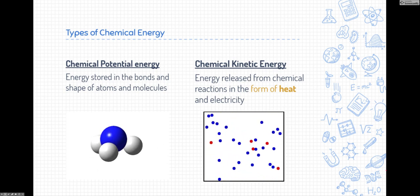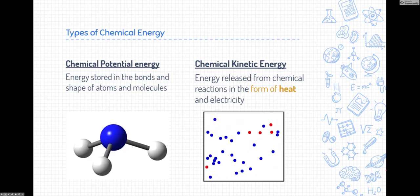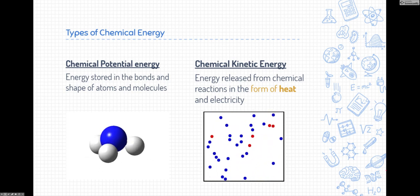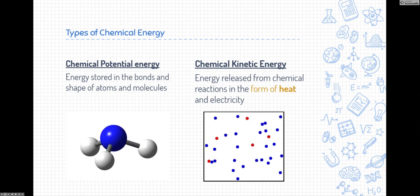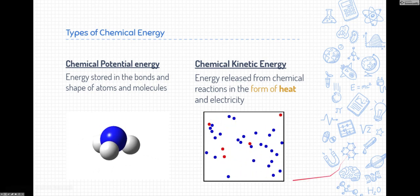Now when we release that energy, let's say we light the firework, that energy changes. It goes into chemical kinetic energy. It's released energy in the form of heat, or sometimes it's released in the form of electricity depending on the type of chemical reaction we look at.